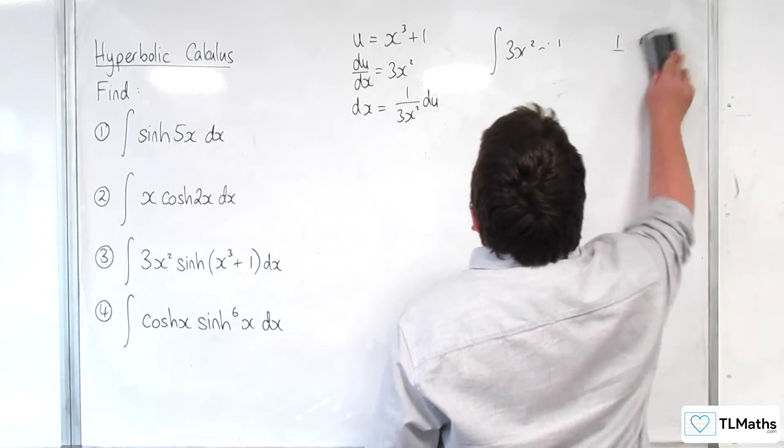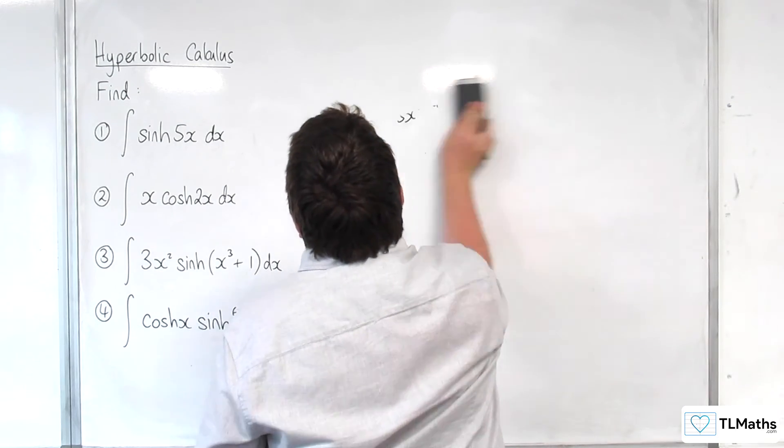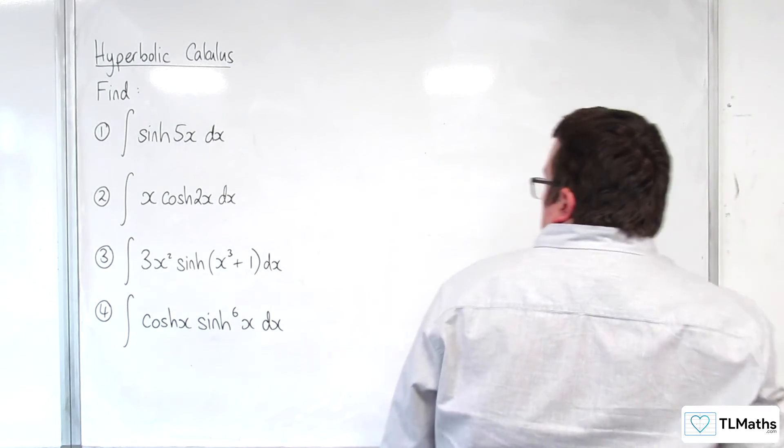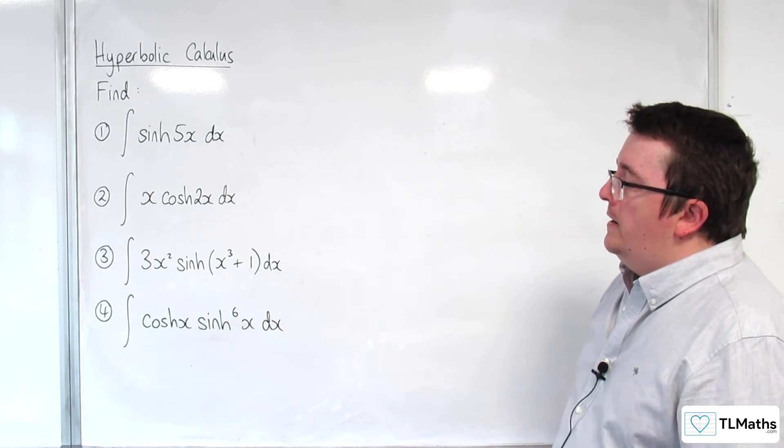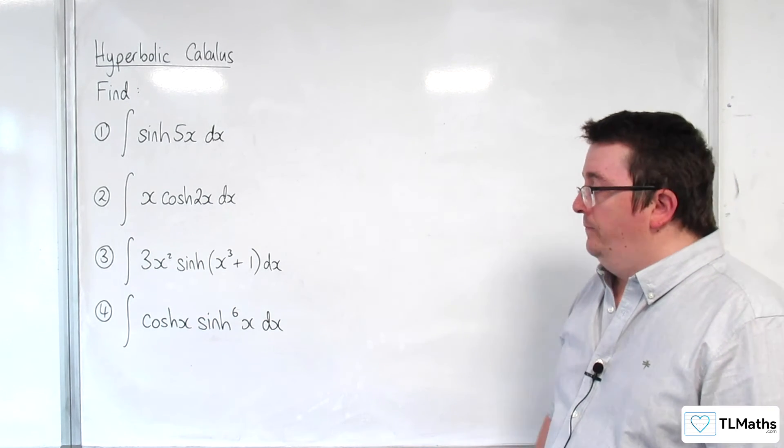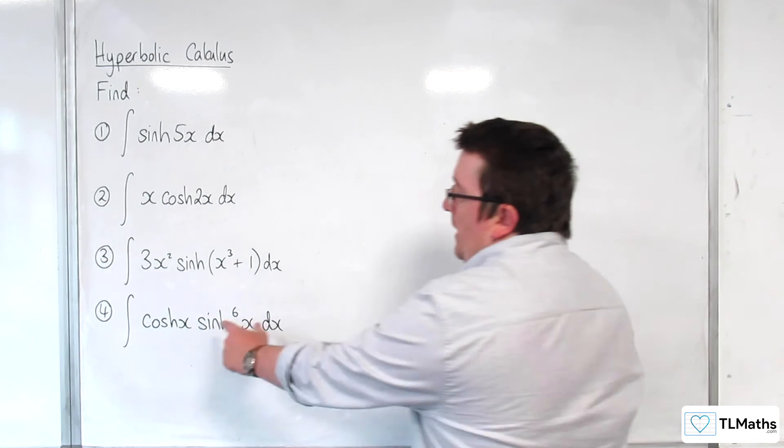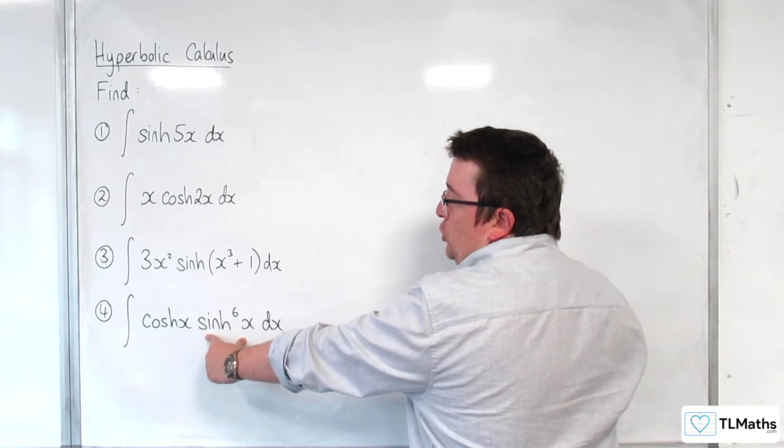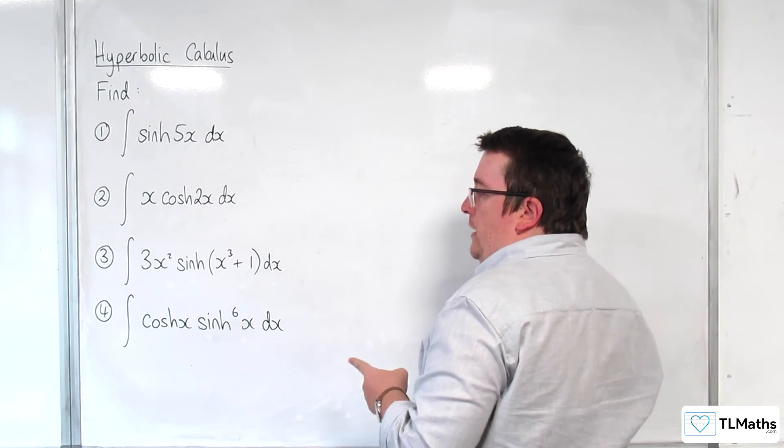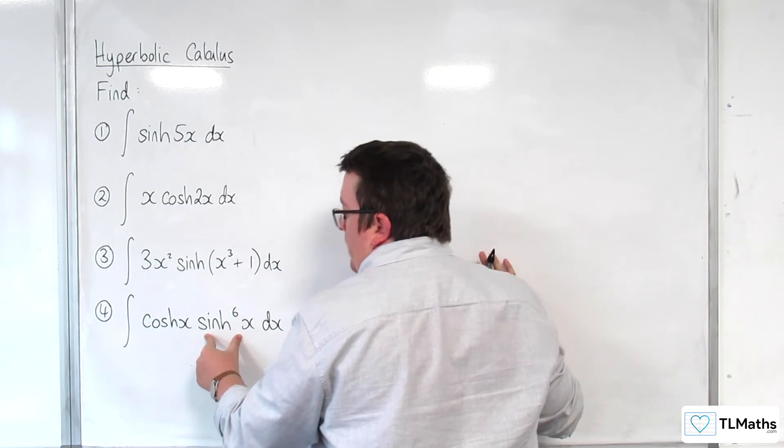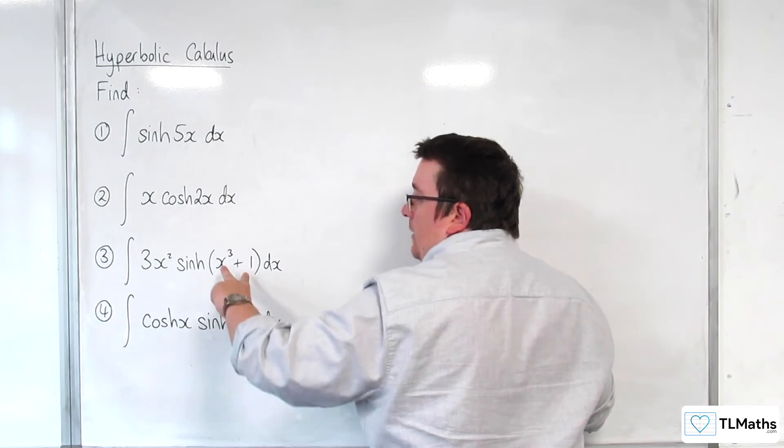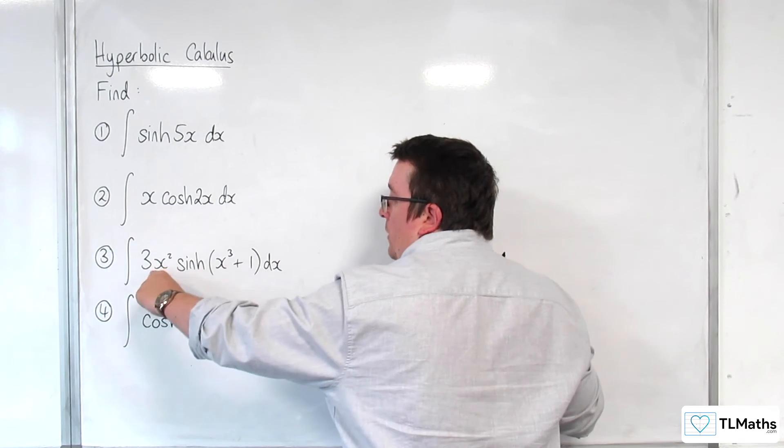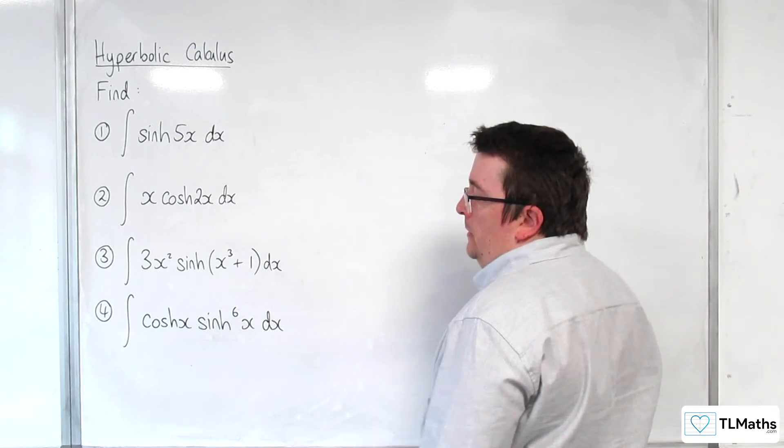Then with the fourth one, now again, you can use reversing the chain rule if you can spot it, or you can use integration by substitution again. So the substitution to make would be u is equal to sinh of x. Now the reason why you would do that is because the derivative of sinh x, the derivative of the interior function, is out here cosh x, in exactly the same way as the derivative of x cubed plus 1 was out here 3x squared.